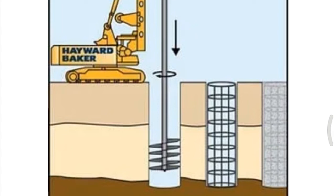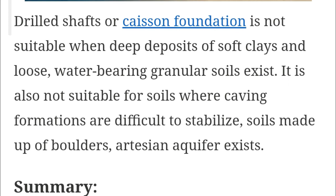Drilled shafts can transfer column loads larger than pile foundations. They are used where the depth of hard strata below the ground surface is located within 10 to 100 meters (approximately 25 to 300 feet). Drilled shaft or caisson foundations are not suitable when deep deposits of soft clay and loose water-bearing granular soils exist, when caving formations are difficult to stabilize, or when soil made of boulders and artesian aquifers exist.